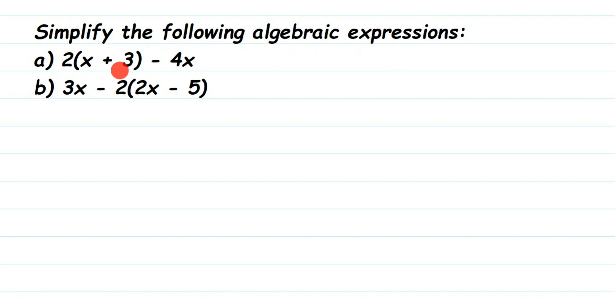We have brackets here. Whenever you see brackets, we have to open the brackets first. So it's 2 into x plus 3 minus 4x. Now if you see here, we have a 2 and there's no operation sign given. This means it's multiplication.